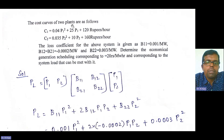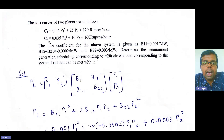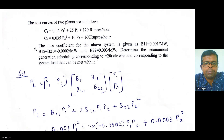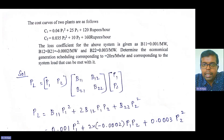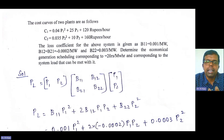The cost curves of two plants are given as follows. C1 is equal to 0.04 P1 squared plus 25 P1 plus 120 rupees per hour. C2 is equal to 0.035 P2 squared plus 10 P2 plus 160 rupees per hour. Note that depending on your country, the currency unit may differ — just follow whatever unit is given in your problem.